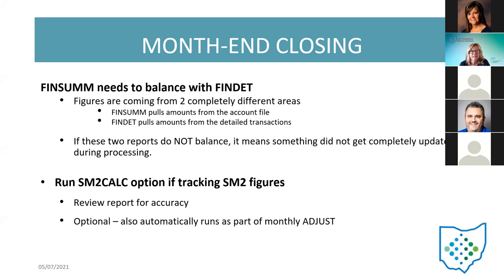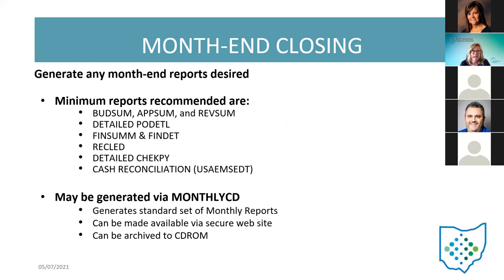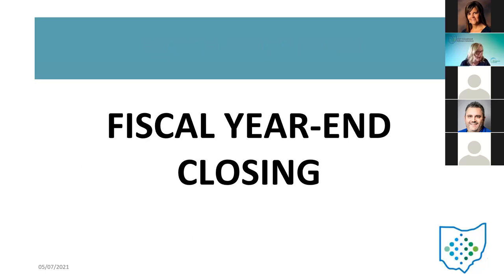The SM2 calc is the next step and this is optional — it's tracking their SM2 amounts. They can run the report to make sure everything looks good. If it doesn't get run, that's okay because it is part of the monthly adjust — when you run month end adjust, it runs SM2 calc automatically. But if they want to do it ahead of time, they can by doing this optional step. Generate any month end reports desired — these are the minimum reports and all of these reports are on monthly CD. They want to make sure they run monthly CD for June as well, which will create all those month end reports. Any questions regarding month end?